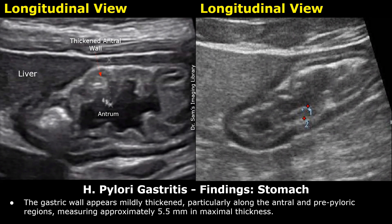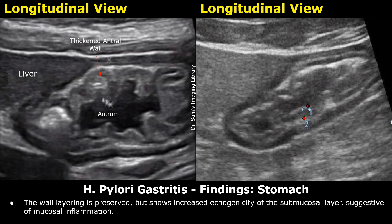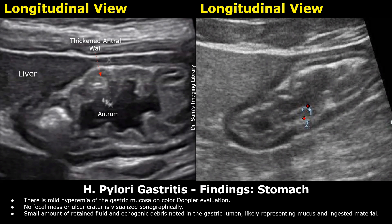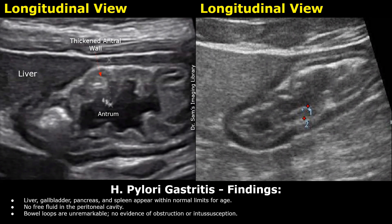These are the findings of the stomach. The gastric wall appears mildly thickened, particularly along the antral and pre-pyloric regions, measuring approximately 5.5 mm in maximal thickness. The wall layering is preserved but shows increased echogenicity of the submucosal layer, suggestive of mucosal inflammation. There is mild hyperemia of the gastric mucosa on color Doppler evaluation. No focal mass or ulcer crater is visualized sonographically. A small amount of retained fluid and echogenic debris is noted in the gastric lumen, likely representing mucus and ingested material. Liver, gallbladder, pancreas, and spleen appear within normal limits for age. No free fluid in the peritoneal cavity. Bowel loops are unremarkable. No evidence of obstruction or intussusception.